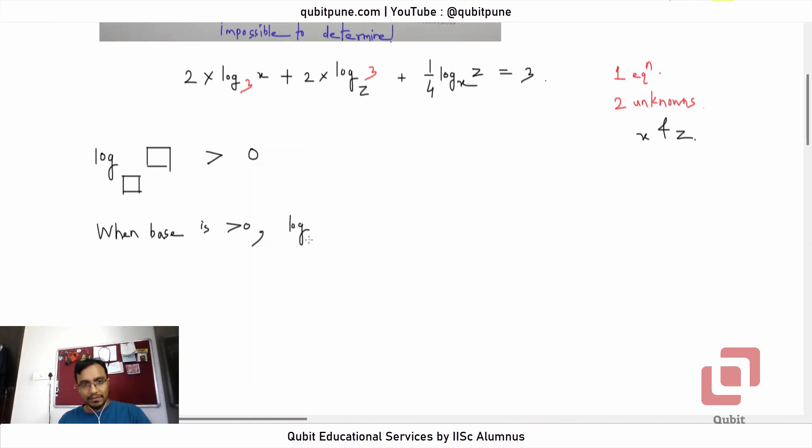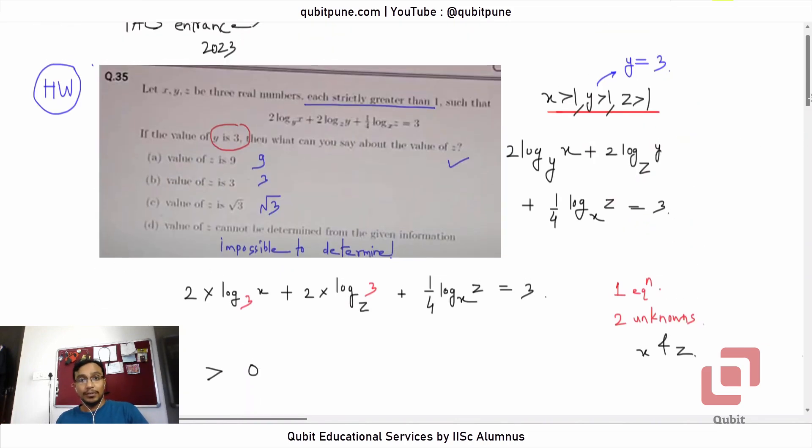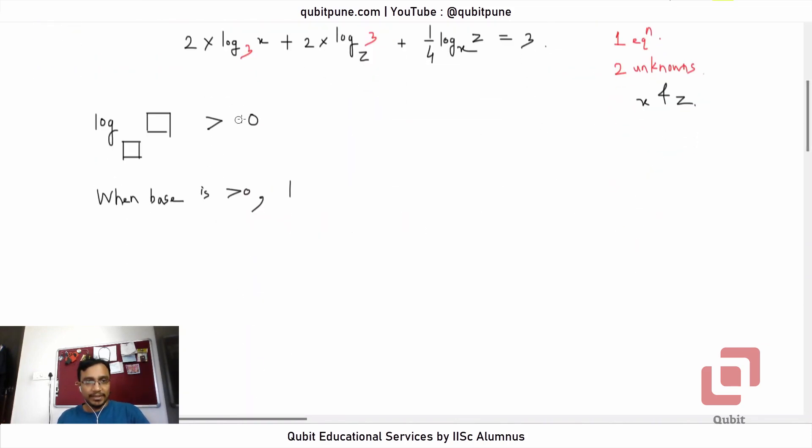When base is positive—oh sorry, not positive, greater than one. When base is greater than one and so is the number, then log is positive. Sorry, log should be positive, okay. But when both are greater than one, now what we can do is assume the following.